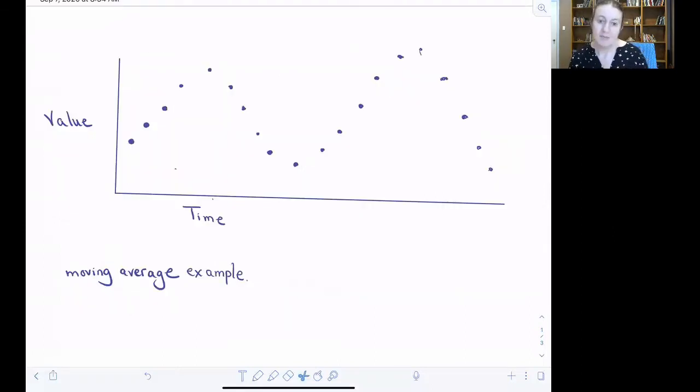So here we have our time series once again, where we have individual observations as the dots over time. The moving average approach smooths over these shorter-term fluctuations by taking an average value over some window of observations. And this window of observations is called the order.